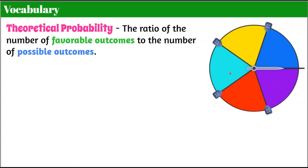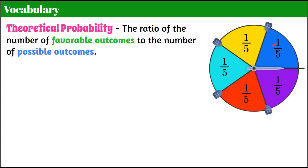So in theory, to spin and land on any one of these colors, we have five possible outcomes. To land on yellow would be a 1 in 5 theoretical probability. In theory, 1 out of 5 times I would land on blue, 1 out of 5 on purple, 1 out of 5 on red, and 1 out of 5 on this turquoise color.